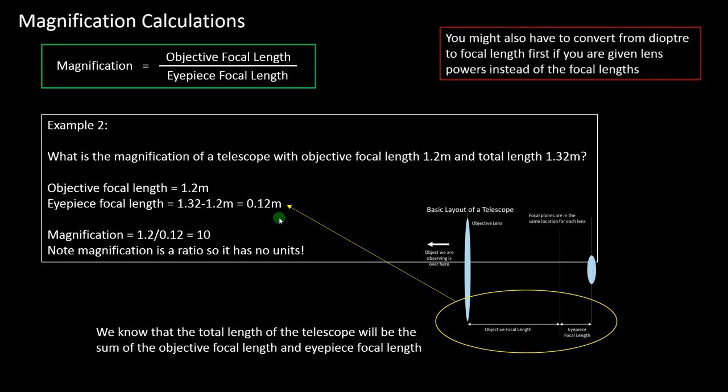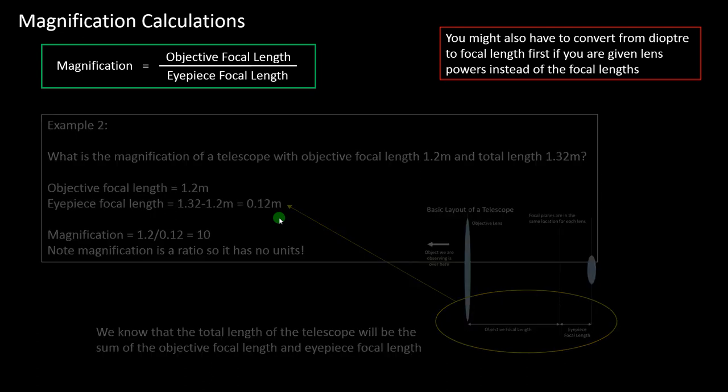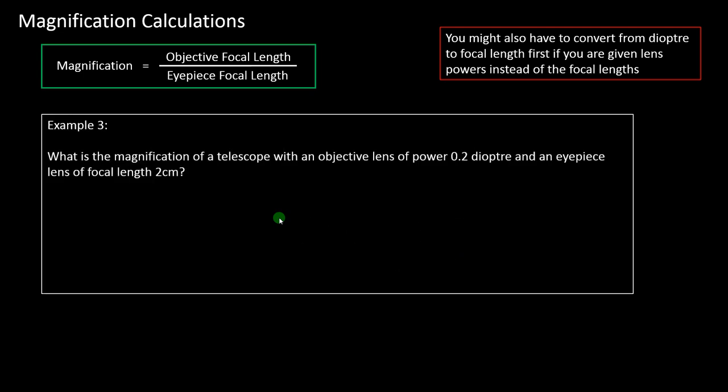The final trick they can throw at you is that we talked about lens power — power equals one divided by focal length in the lens video. They may give information in the form of lens power instead of focal length. For example: what's the magnification of a telescope with an objective lens of power 0.2 diopters and an eyepiece lens of focal length 2 cm? That's a mixture of the two types of information. Pause and have a go, watching out for little tricks.